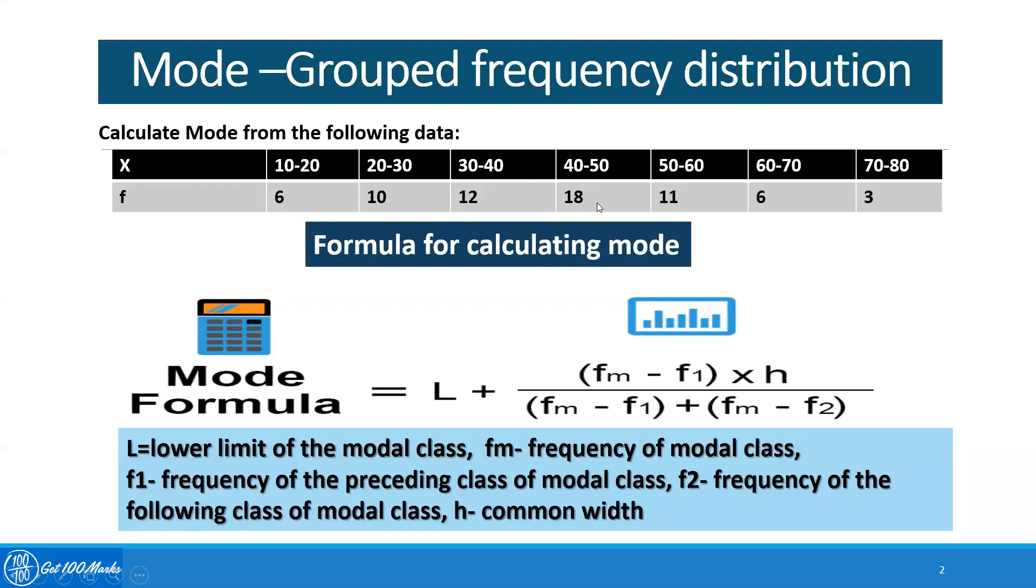Fm is the frequency of the modal class. In this situation, it is 18. F1 is the frequency of the preceding class of the modal class. Preceding means the before class. So in this situation, it is 12.